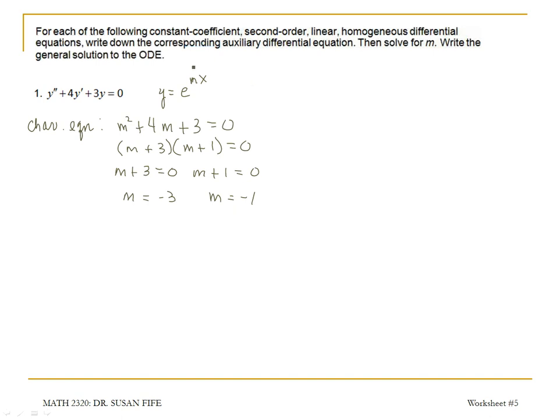Now, each one of these m's goes back into our solution that we have here to get y equals e to the negative 3x. That's going to be one solution, and so I'll call that y1. And another solution to the equation is y2 equals e to the negative 1x, or just y2 equals e to the negative x. So these are my two solutions.